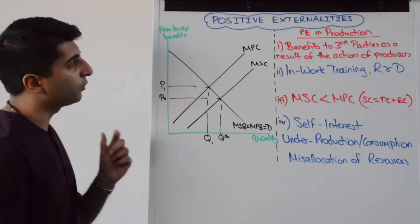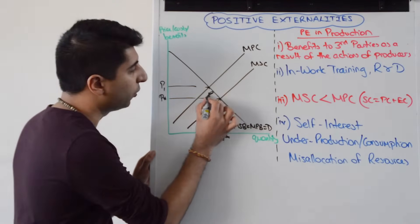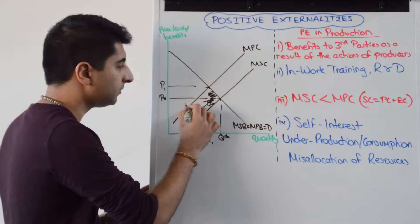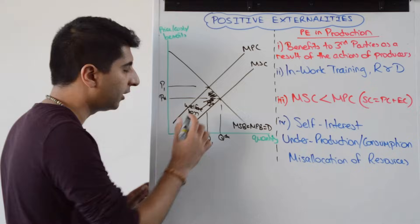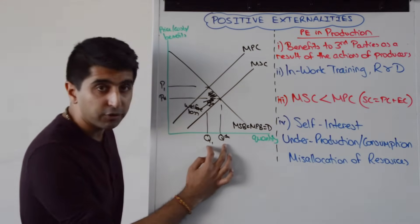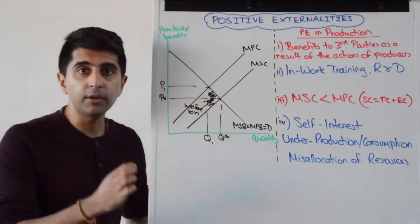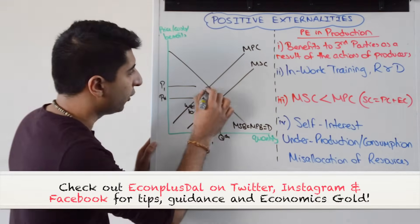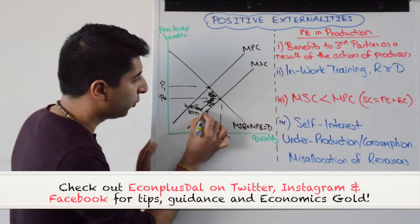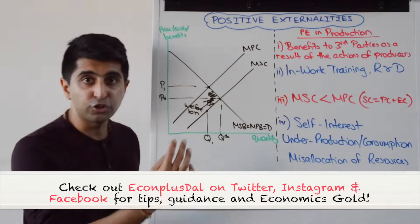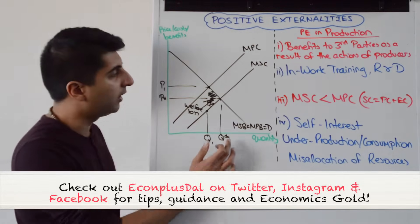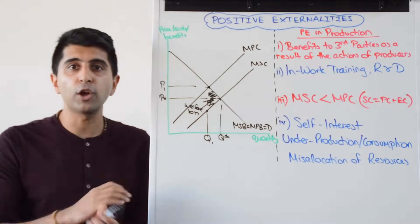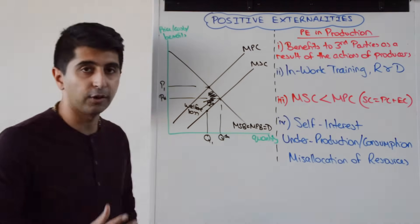And remember, the welfare loss triangle is always the triangle that points towards the social optimum — and there it is, the welfare loss. Why is it a welfare loss? Well, these extra units from Q1 to Q* could have been produced at more benefit than cost. If we look at Q1, social benefit is over here and social cost is way down here. So all these extra units that should be produced to reach Q* would be produced where benefit is higher than cost in each case. By not producing them, we are losing out on extra welfare.